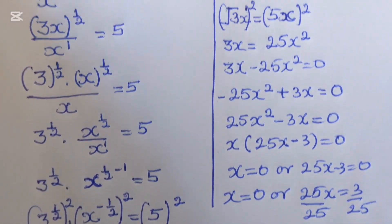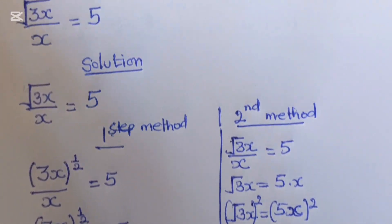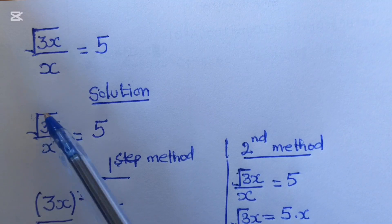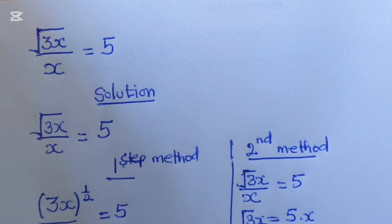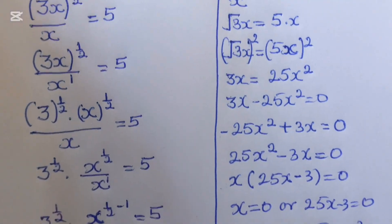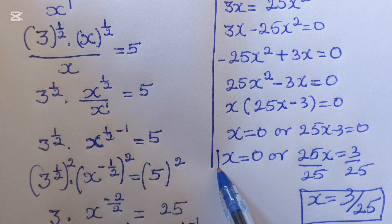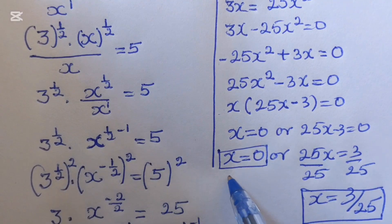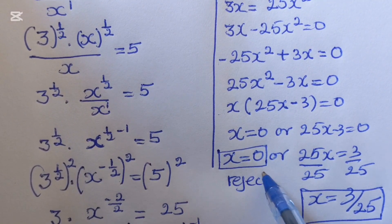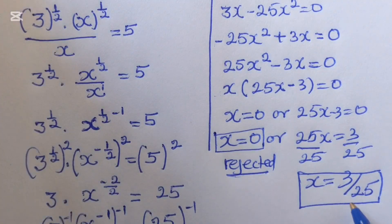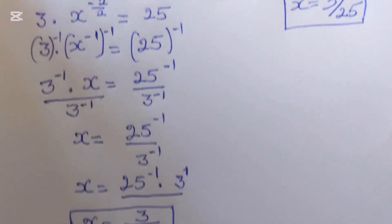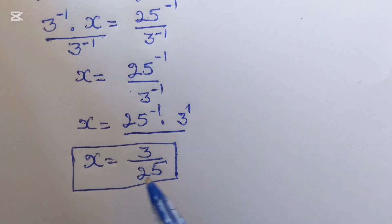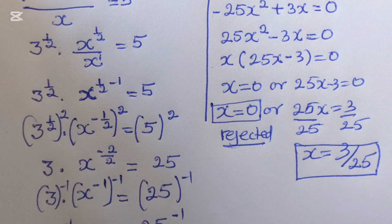Now we must note that since the original equation has x in the denominator, x equals 0 must be rejected as a solution — it would make the denominator zero. Therefore the only valid solution is x = 3/25. This second method is preferred as it provides the real solution clearly. Thanks for watching, and don't forget to share and subscribe.